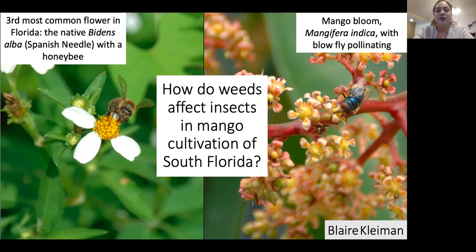Pollen analysis of weed and mango flowers is conducted and insect specimens are examined for pollen to determine which are acting as pollinators. The study is completed within one year with weekly data collection from the end of one production season to the next. Sampling of fruit yield per tree is done visually by multiple observers, averaged, and counted when harvested.